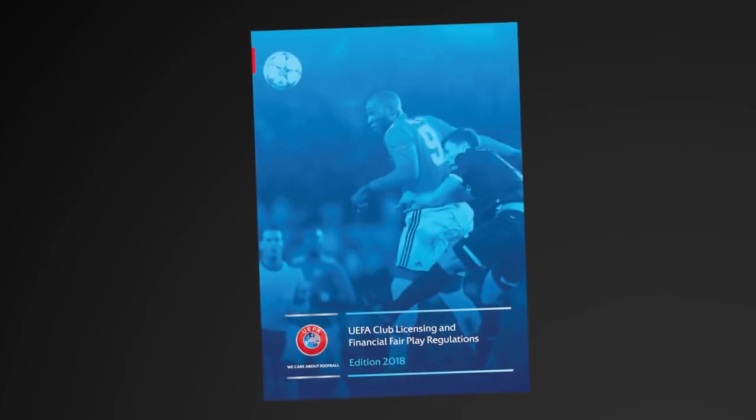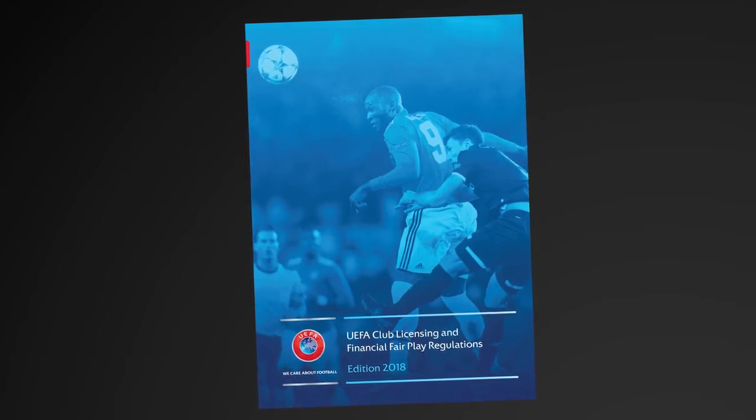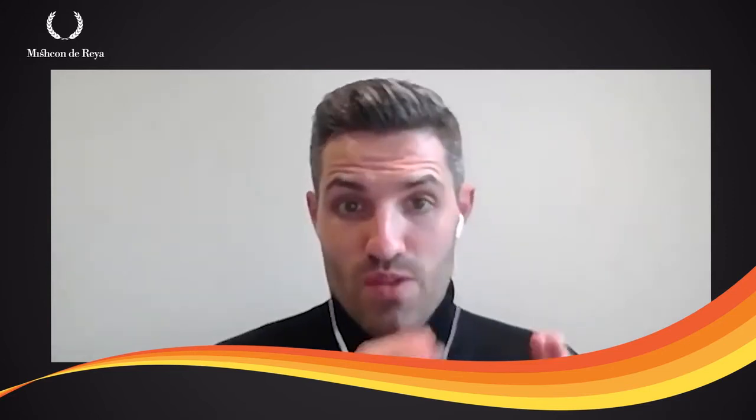So how does FFP actually work? Let's start by looking at the UEFA model. Under the UEFA FFP rules, clubs are required to meet a break-even requirement. Despite its name, this doesn't actually mean that clubs have to break even. Instead, they're permitted to lose up to 5 million euros over a three-year period as what's called an acceptable deviation. This acceptable deviation can be increased up to 30 million euros over a three-year period if the excess — the amount between 5 million and 30 million — is covered by contributions from equity participants, meaning the club's owner injects equity by putting money into the club in exchange for shares.